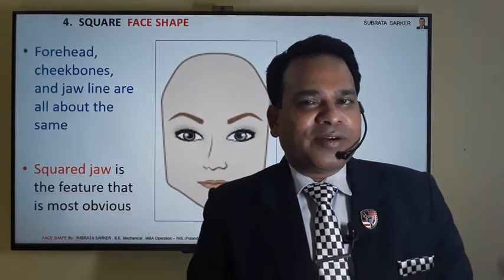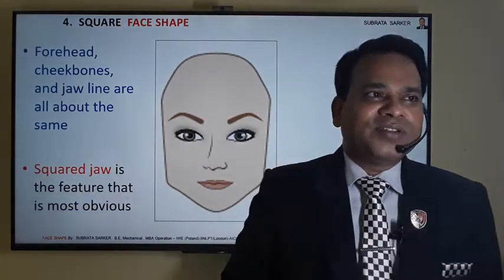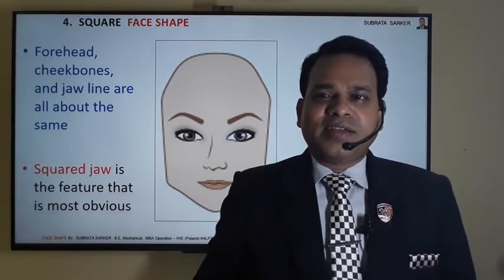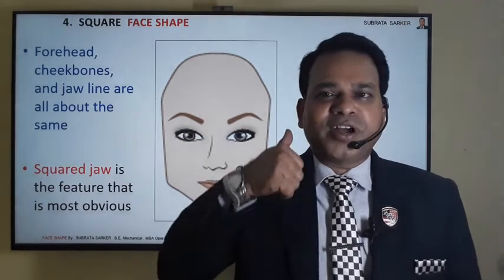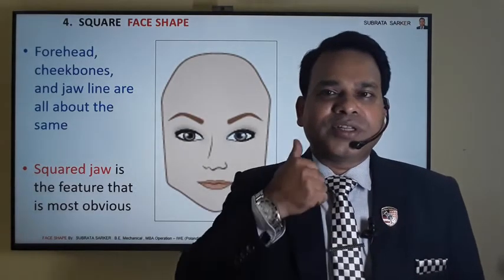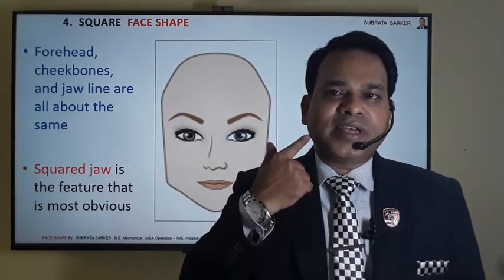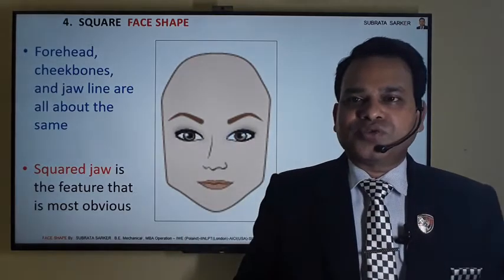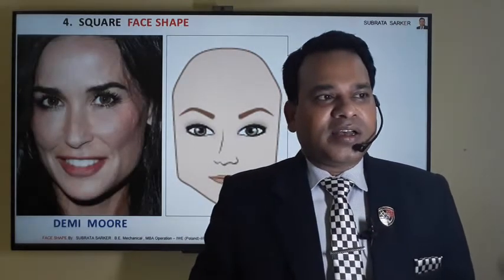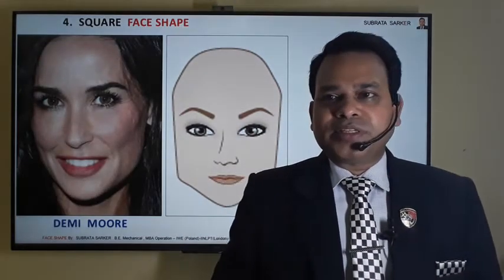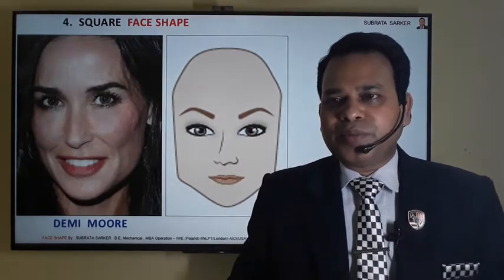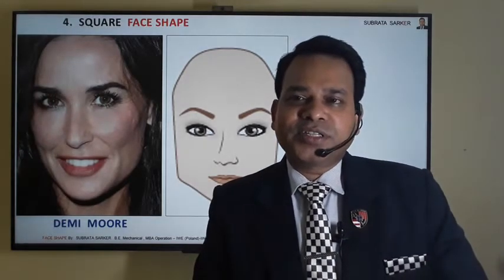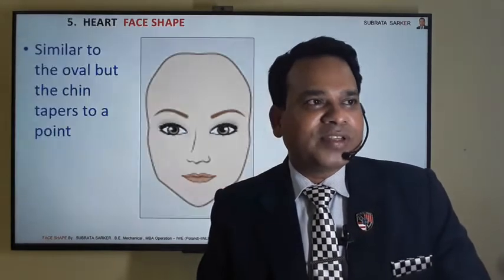The fourth type is the square face. Here there is a sharp corner on this side, in the jaw area — it is a square face. Demi Moore, a very reputed supermodel, she has got a square face.